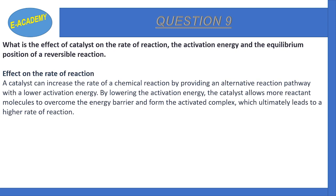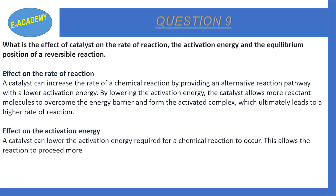When we add a catalyst, we provide an alternative pathway for the reaction, which means the activation energy is lower. A catalyst can lower the activation energy required for a chemical reaction to occur. This allows the reaction to proceed more quickly and with lower energy input than an uncatalyzed reaction.